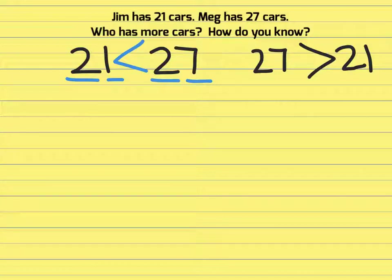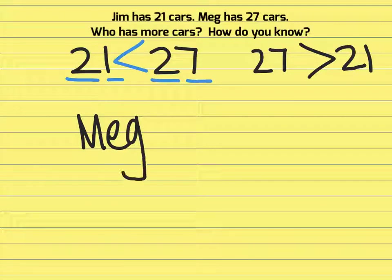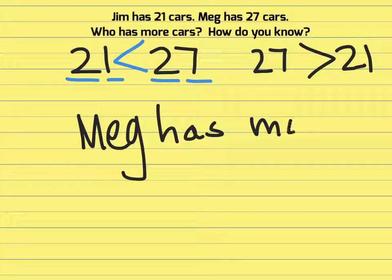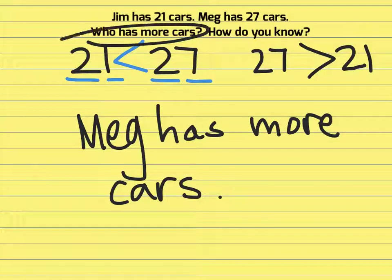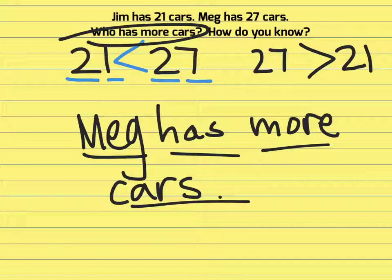Finally, they'll write a sentence saying, Meg has more cars because they need to answer that question. Who has more cars? Meg has more cars and it's done. So that's an overview of unit 1.4.